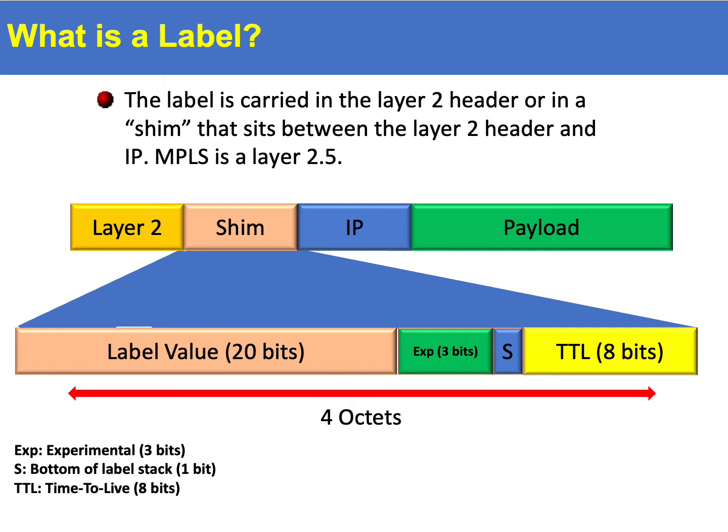The next three bits are known as the experimental bits and are used to indicate the quality of service or priority of the label. It is possible to have multiple labels stacked on top of each other. The one bit bottom stack flag or S-bit is used to signify that the current label is the last in the stack if it's set.